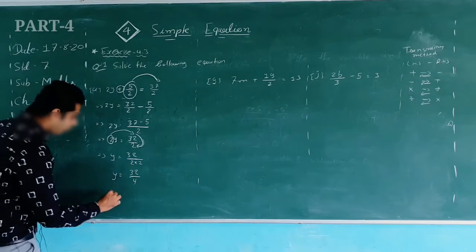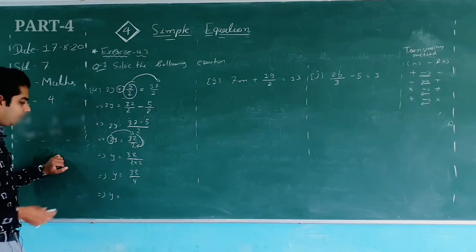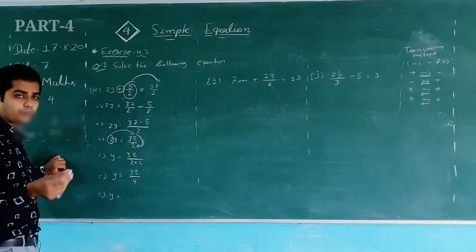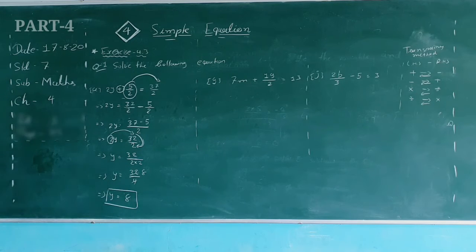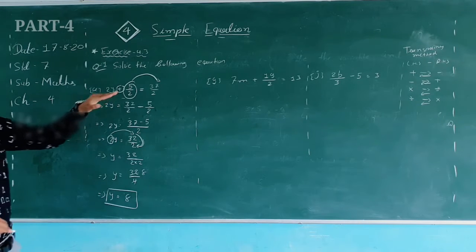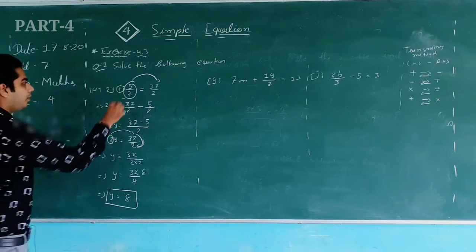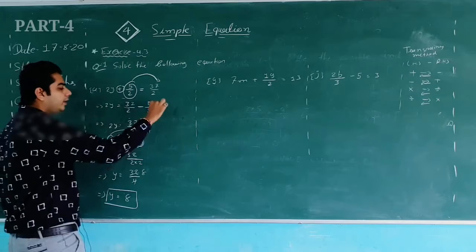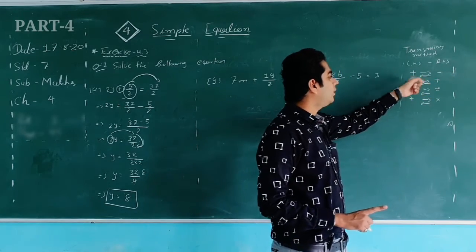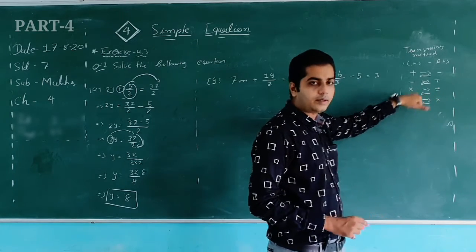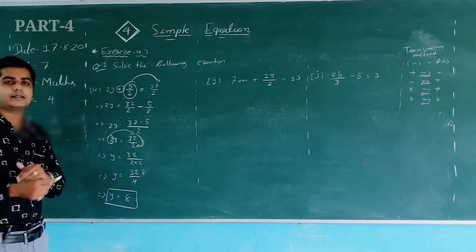Now we divide: 32 ÷ 4. From the 4-times table, 4 × 8 = 32, so y = 8. That is your final answer. To remember the transposing method: if a term is in addition it goes to subtraction, subtraction goes to addition, multiplication goes to division, and division goes to multiplication.